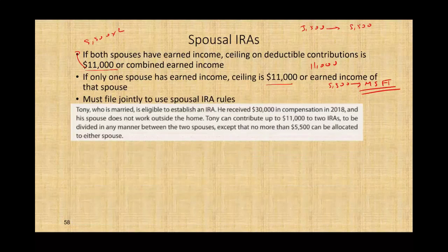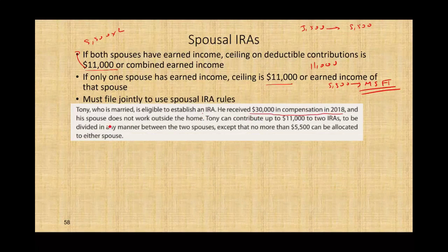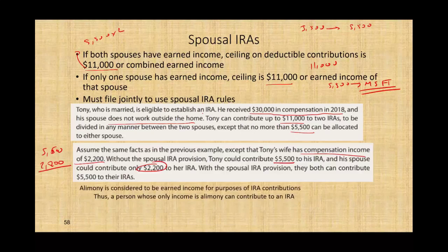Tony is married and eligible to establish an IRA. He received $30,000 in compensation in 2018, and his spouse does not work outside the home. Tony can contribute $11,000 to two IRAs divided between the two spouses, with no more than $5,500 allocated to either spouse. Also, alimony is considered earned income — so a person whose only income is alimony can still contribute to an IRA. Note: alimony is suspended starting 2018, but prior arrangements still count.